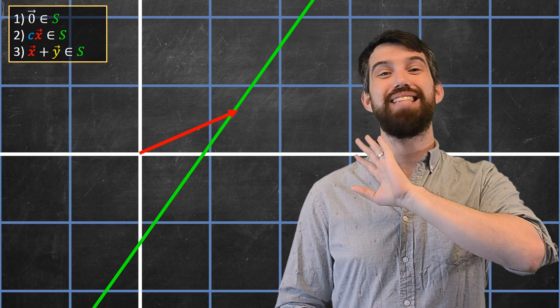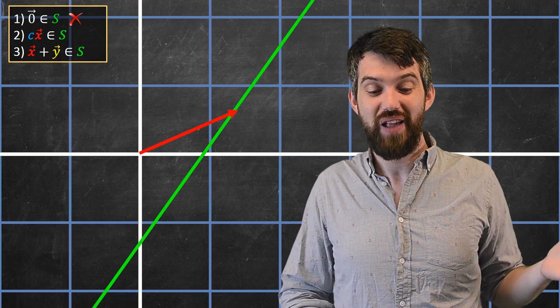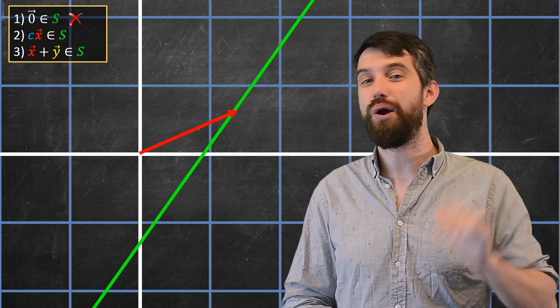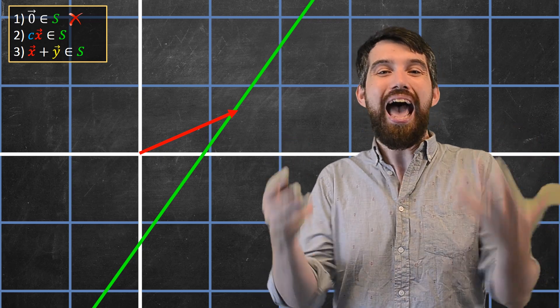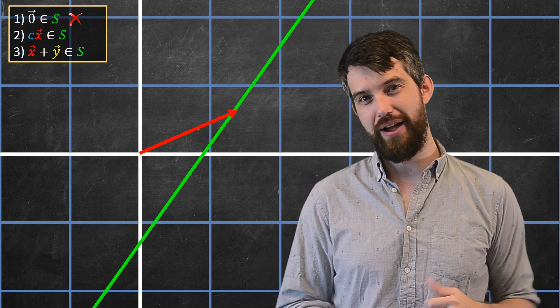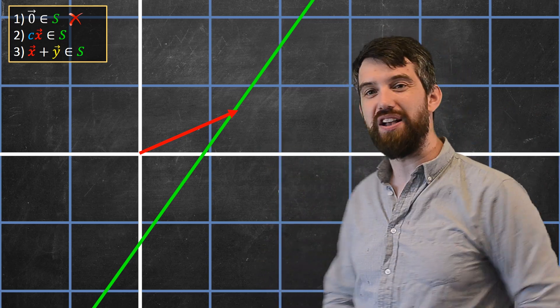Now, you might just say, look Trevor, this is actually really easy. This zero vector is not on the line, so clearly this is not going to be a subspace. Then you might ask, well hold on, why are you even asking? Why are you demanding that the zero vector is on here? So let me show you a few of the reasons why this fails.